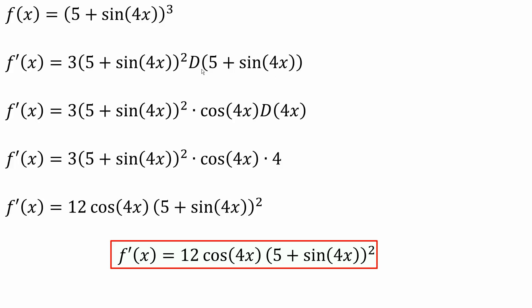In getting the derivative of this piece we need to do the chain rule again for sine parentheses 4x because the derivative of sine would give us cosine and then we keep the inside piece, then we take the derivative of the inside piece.